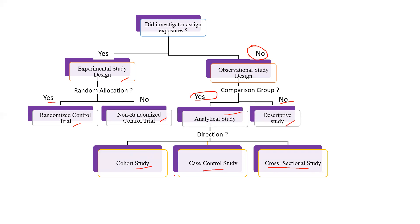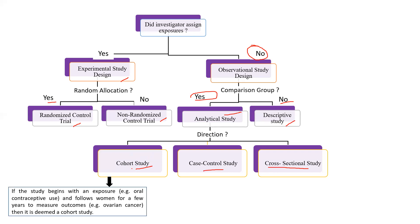We need to understand what is the cohort study design. In a cohort study design, the study begins with an exposure — for example, oral contraceptive use — and follows women for a few years to measure outcomes, for example, ovarian cancer. Then it is a cohort study.